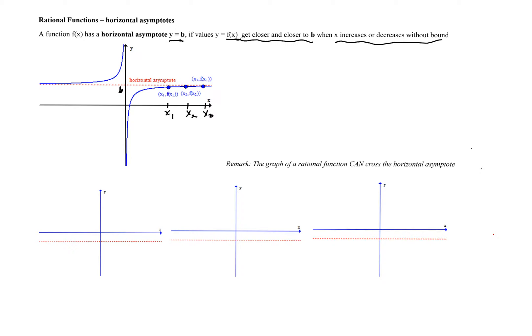The picture shows the relationship between the graph of the function and the horizontal line y equals b. If we look at the plotted points — x sub 1, f of x sub 1; x sub 2, f of x sub 2; and x sub 3, f of x sub 3 — we can see that the x values are increasing, getting larger and larger. As for the corresponding points on the graph, they will be approaching the line y equals b.